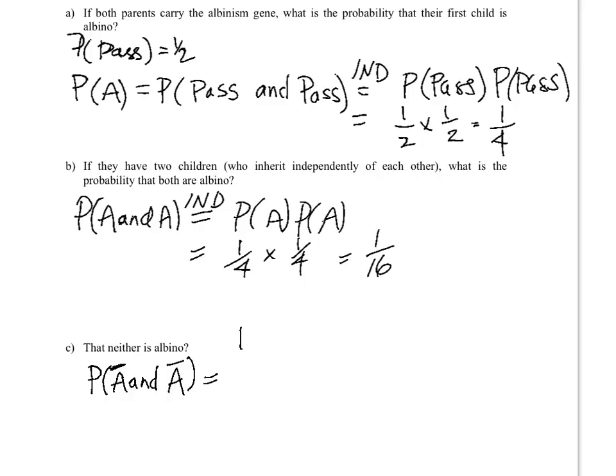then the probability of no albino child is going to be one minus that. So the probability of not being albino is going to be one minus the probability of being albino, which is one minus one fourth, or three fourths.